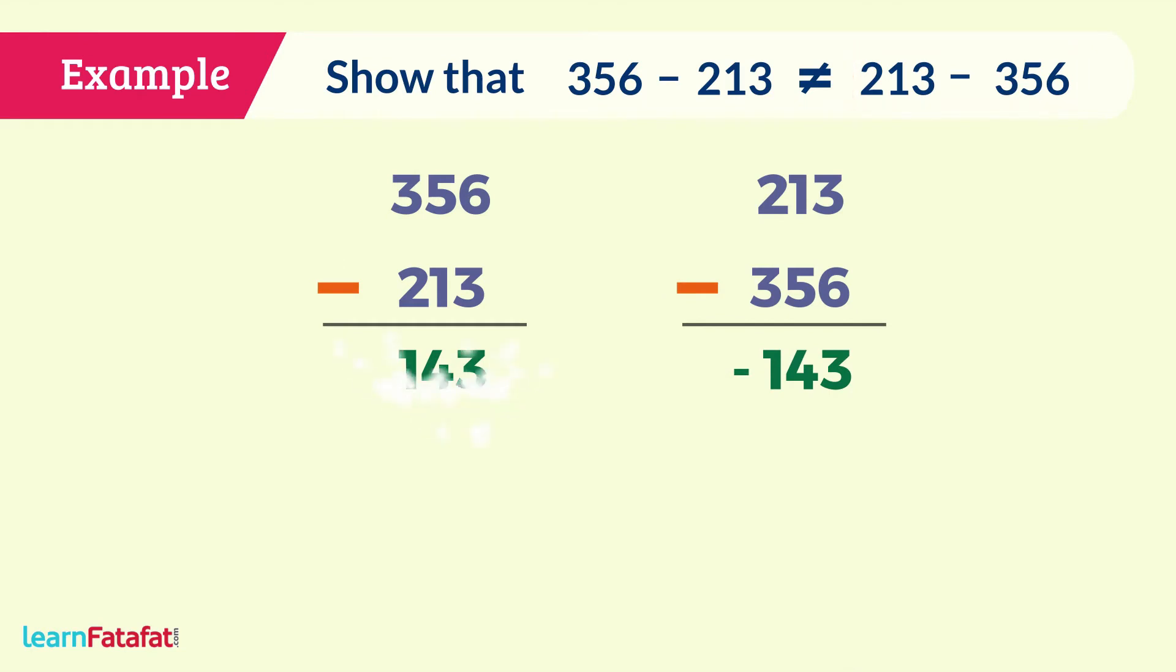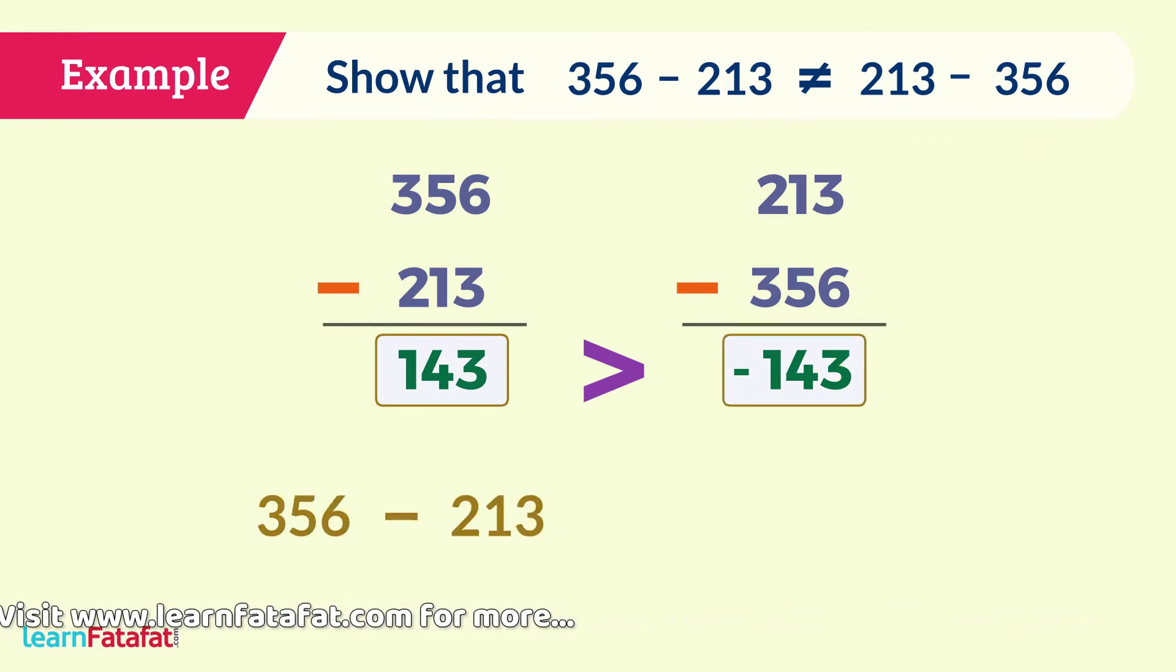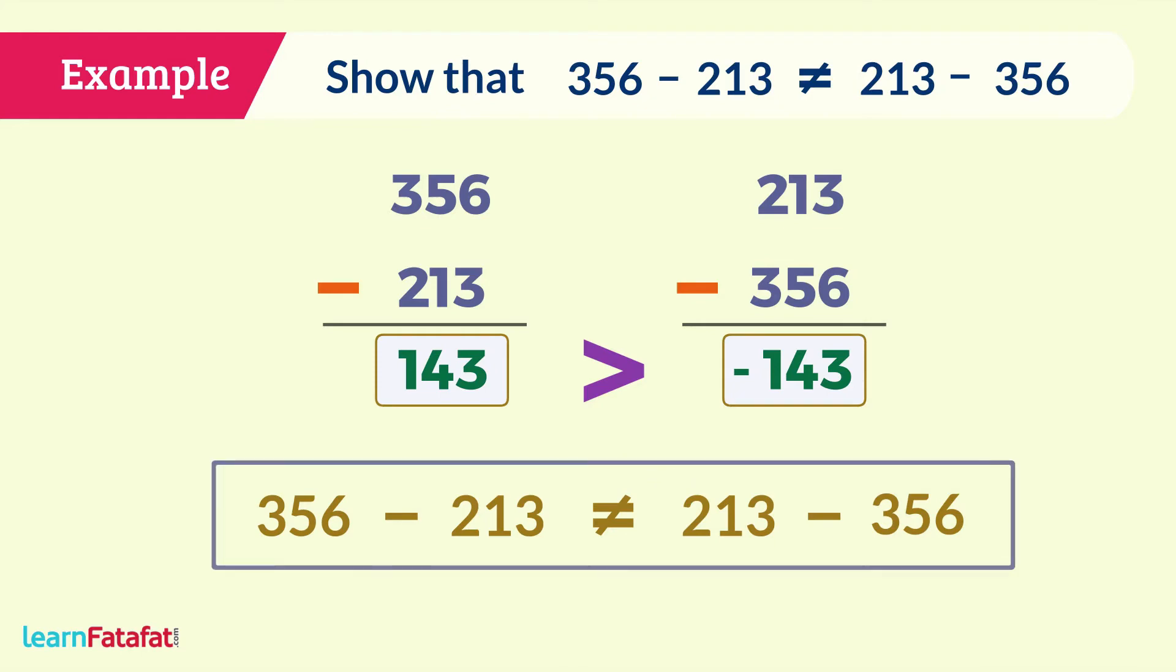Since positive result 143 is greater than negative result minus 143, 356 minus 213 is not equal to 213 minus 356. Subtraction of integers does not follow commutativity.